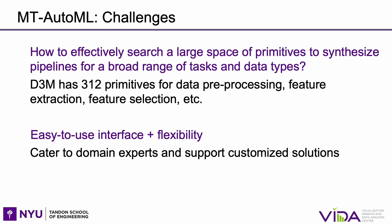A key challenge involved in supporting multiple machine learning tasks and data types is the explosion in the size of the search space. With more than 300 primitives and over 1000 hyperparameters in the D3M ecosystem, the search space becomes very large. AutoML systems should also support usability and integration with other tasks in the data science life cycle, from data exploration to model deployment.